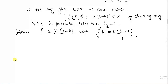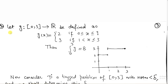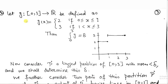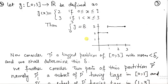The next example: consider the function g defined on the closed interval [0, 3] as follows — g(x) = 2 when 0 ≤ x ≤ 1, and g(x) = 3 when 1 < x ≤ 3. We shall prove that the Riemann integral of g equals 8. This is the graph of the given function.